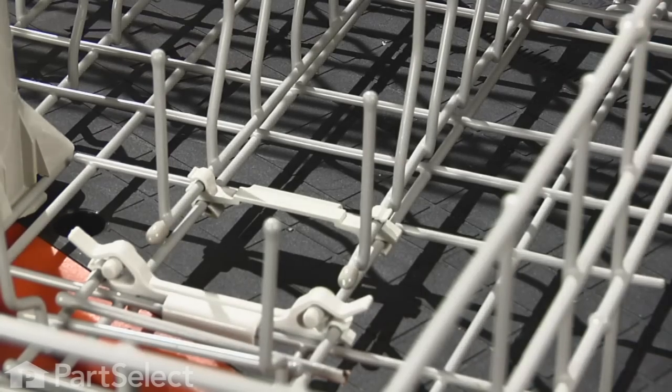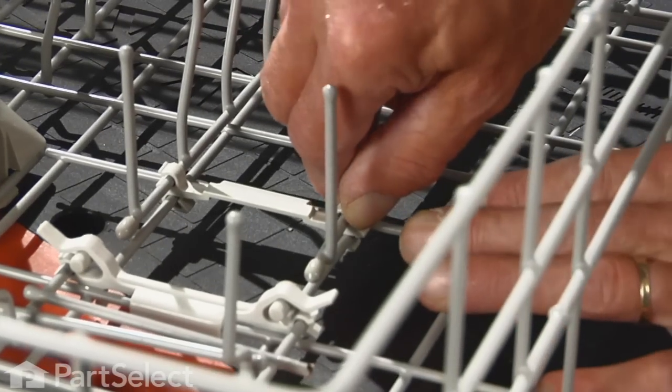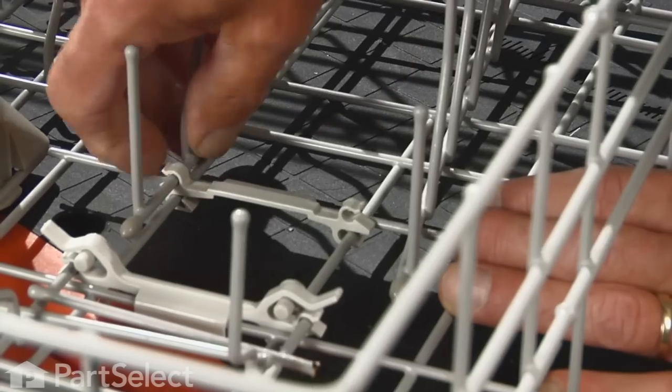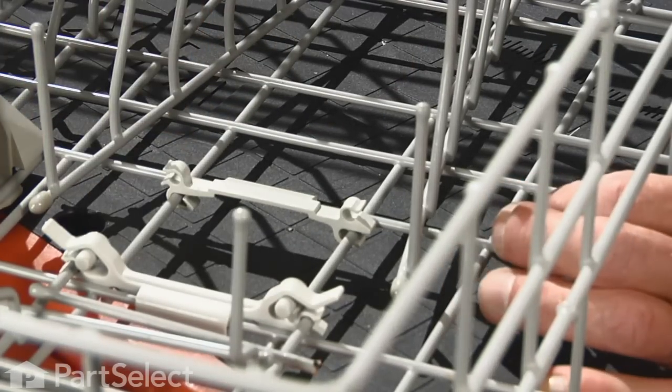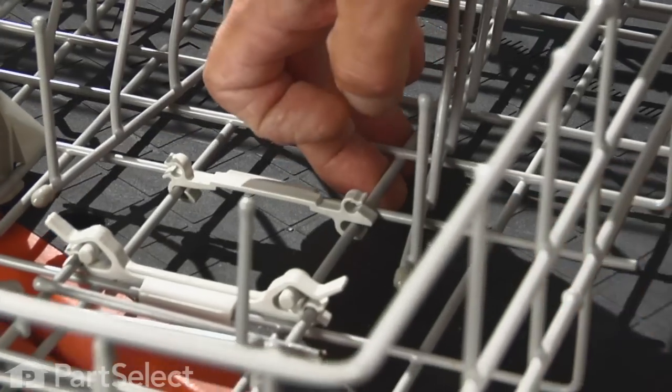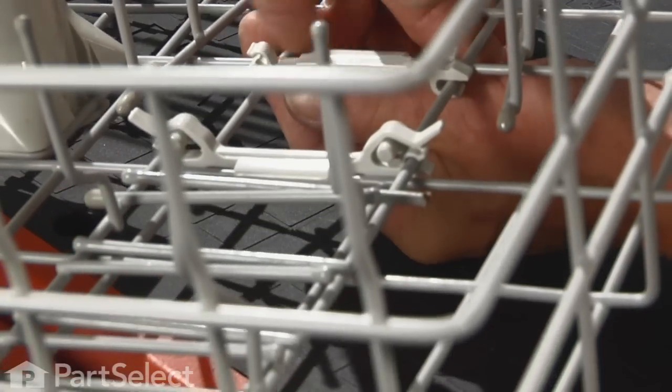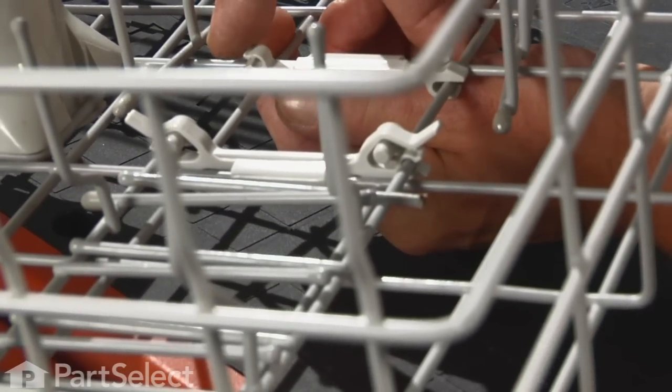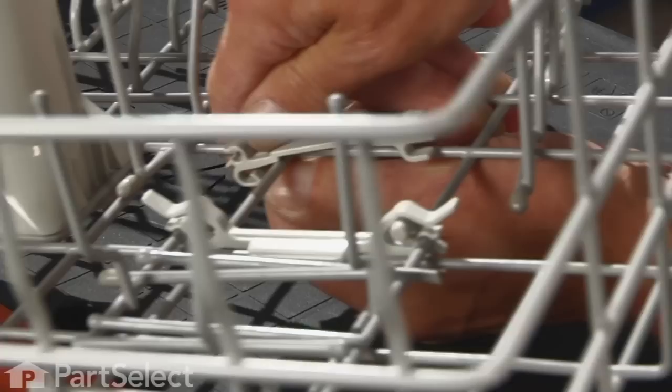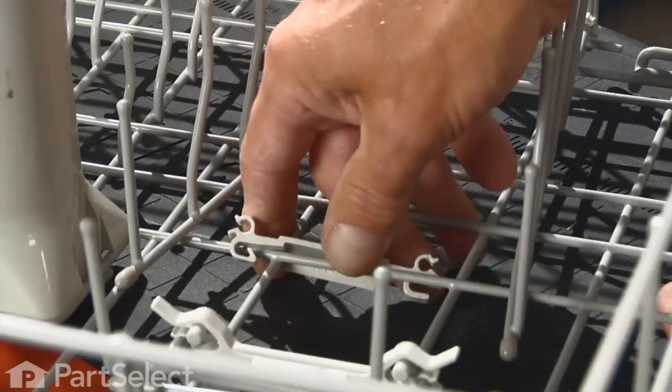What we need to do is disengage the fold-away tine from the clip, then release the locking tab on the bottom, slide it away, and lift the part off.